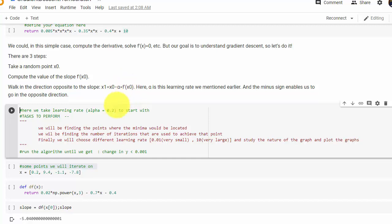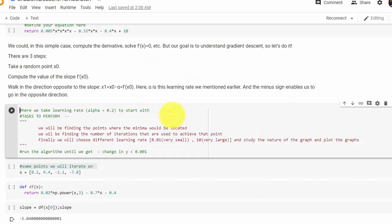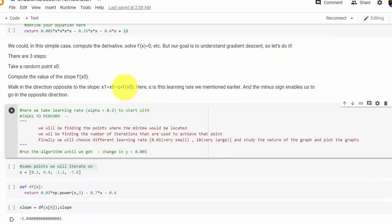Think about the slope of the curve where this man is standing — the slope is positive and he wants to come to the minimum. Imagine sitting on a slide where the slope is positive; you'll come down to the left. So when the slope is positive you shift left, and when the slope is negative you shift to the right. This is the basic principle used in this algorithm — f-prime of x is the slope of the equation.